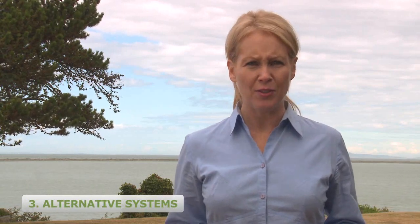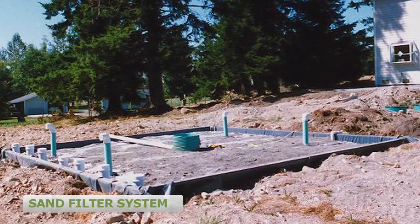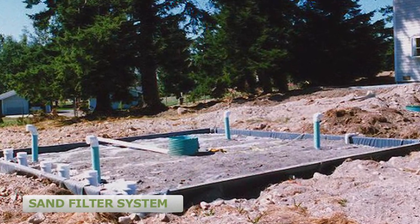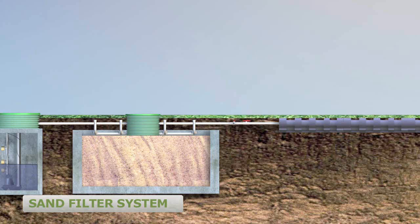Another type of alternative system is the sand filter system. A sand filter is basically a box of engineered sand and gravel which treats the wastewater. A sand filter requires only one and a half to two and a half feet of suitable native soil. The wastewater is applied at the top of the sand filter and flows down through the sand and gravel receiving treatment. Then the pre-treated wastewater flows either by pressure or gravity to a drain field for final treatment and dispersal.